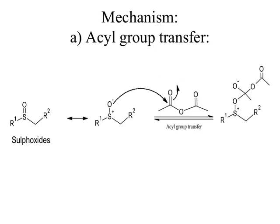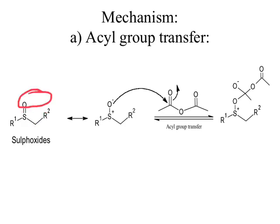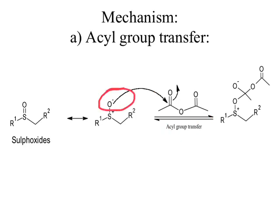Now let us begin with the mechanism. The first step is acetyl group transfer. This is the sulfoxide, and we can write its resonating structure. When we have S=O, the sulfur atom is electrophilic in nature and oxygen is nucleophilic in nature. So we can write the same structure as S⁺–O⁻, with a negative charge on the oxygen atom. In acetic anhydride we have a carbonyl group, which is electrophilic in nature, and the oxygen of the sulfoxide is nucleophilic. So this negatively charged oxygen atom will attack on one of the carbonyl carbons of acetic anhydride. When it attacks, the oxygen will acquire a negative charge and the acetic anhydride group will get attached to this negatively charged oxygen atom, leading to formation of this intermediate.